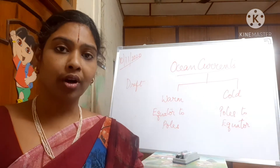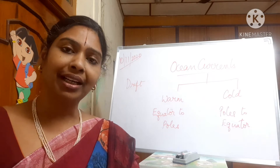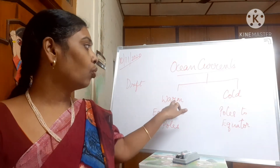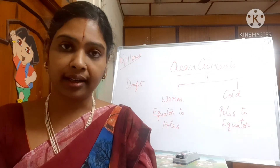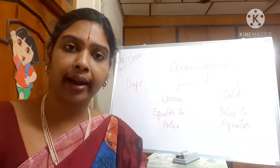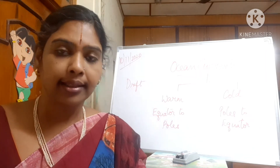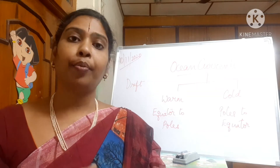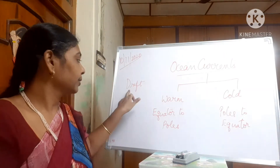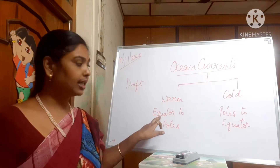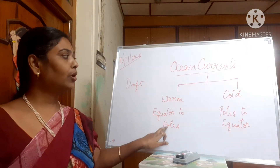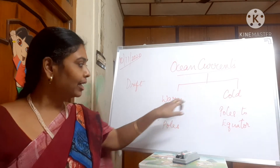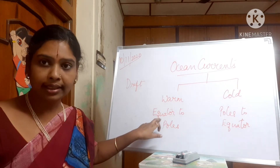The next movement of water we are going to see is the ocean current. These are large scale movements of water in the ocean, divided into two types: warm ocean currents and cold ocean currents. They are wide in nature and their speed is more than five knots. If they are shallow and the speed is less than 0.5 knots, that is known as a drift. Warm ocean currents originate near the equator and flow towards the poles, while cold ocean currents originate near the poles and flow towards the equator.